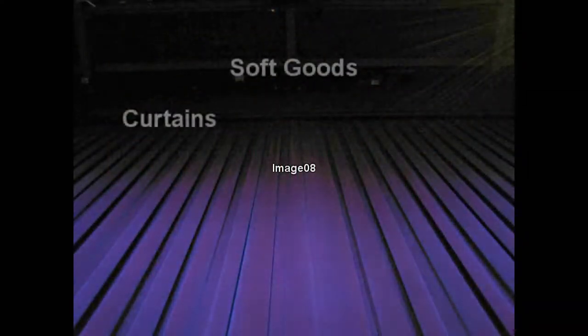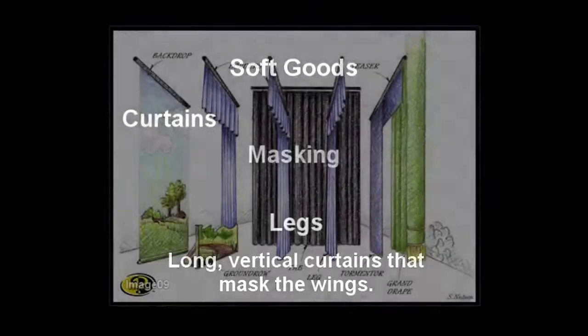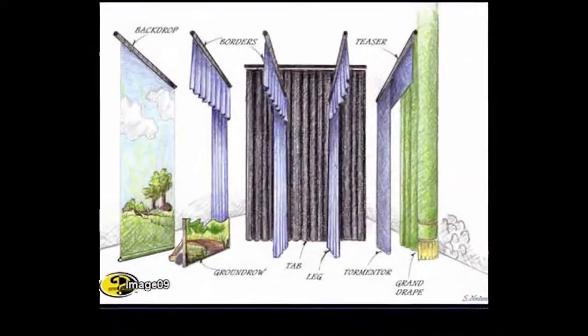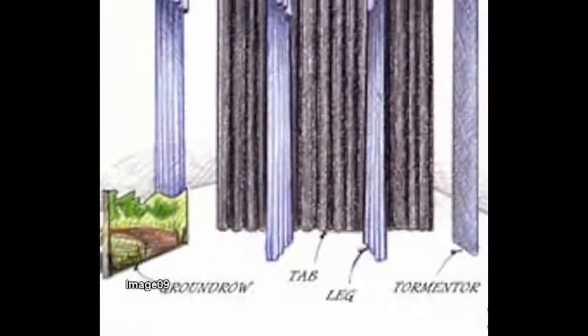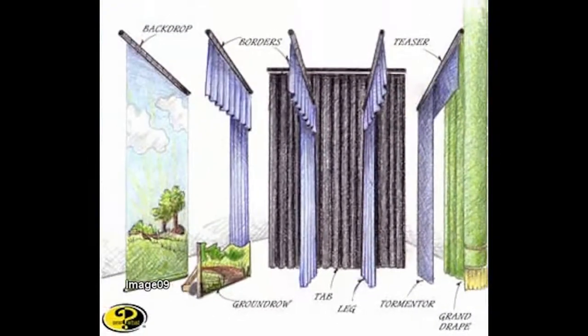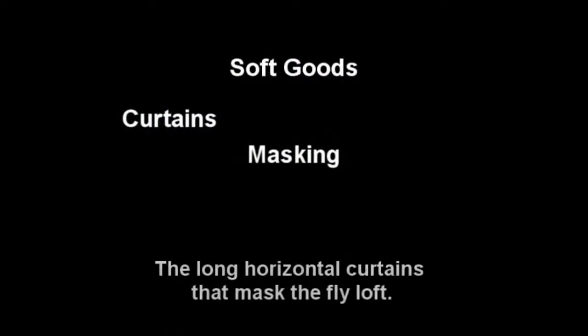Moving on to the stage, there are levels of soft goods that continue to mask the wings and the loft. The long vertical curtains that mask the wings are referred to as the legs. The long horizontal curtains which hang above the stage in order to mask the fly loft are referred to as the border.